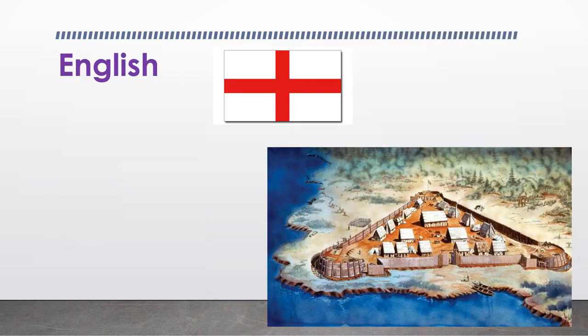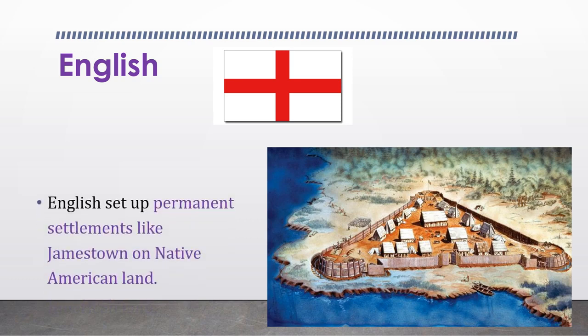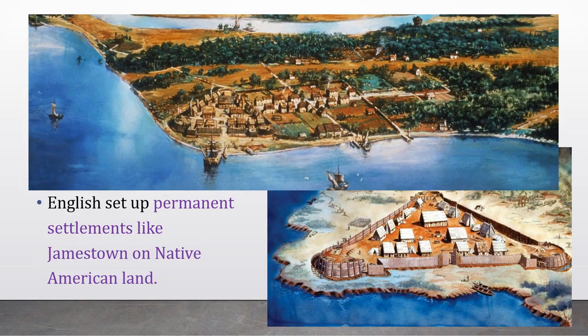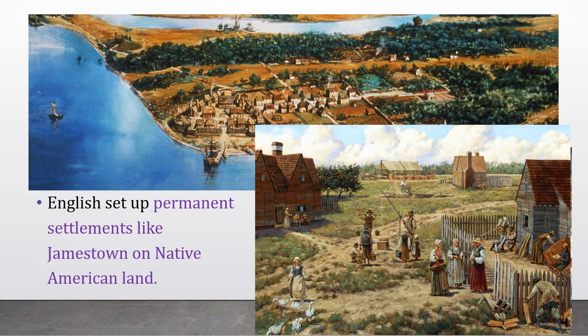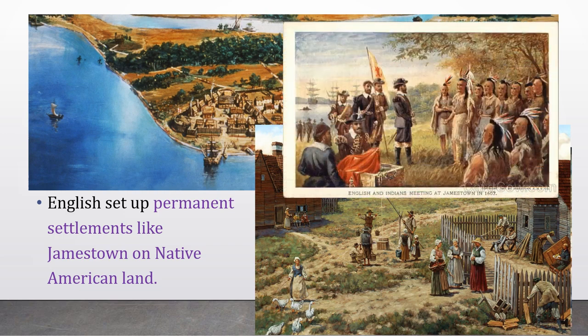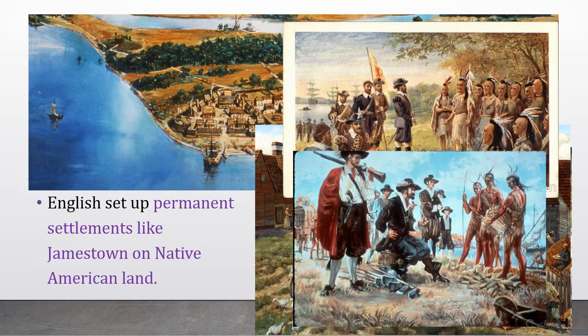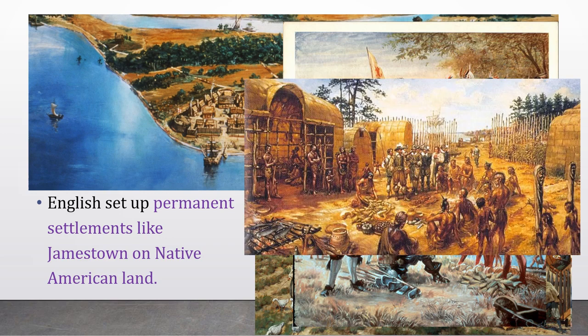And then there's the English settlers who first come in 1607. Their goal is to set up homes, farms, and towns with goals of permanent settlements that families can come to live, like Jamestown. At first, the Native Americans were curious about the English settlers, wondering what they were doing here. Interactions were mixed between trading tools and weapons for food and other means of survival, but were sometimes hostile when Native Americans recognized that the English were there to stay.